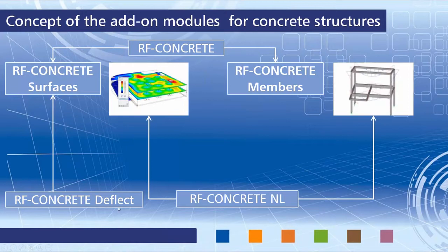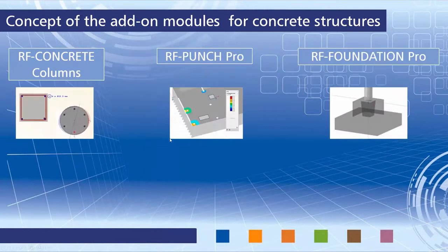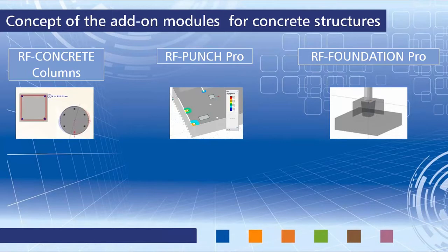RF Concrete Deflect calculates deformations with an approximate method and therefore the calculation is faster. For columns, you have RF Concrete Columns, which performs a stability proof based on nominal curvature as described in Section 5.8.8 of Eurocode 2. We also have RF Punch Pro for the design of punching shear resistance — a module just recently released where you can design punching at column ends, wall endings and corners. And last but not least, RF Foundation Pro is for the design of foundations including single footings and block foundations.